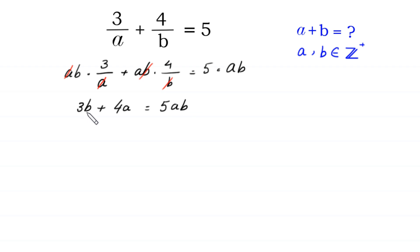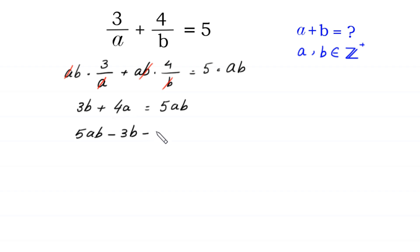Now we move 3B and 4A to the right side. So 5AB minus 3B minus 4A is equal to 0. From these two terms, 5AB minus 3B, we can factor out B.